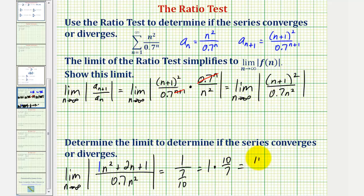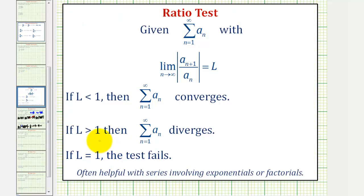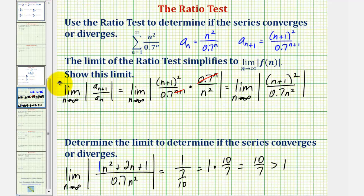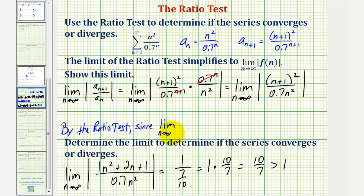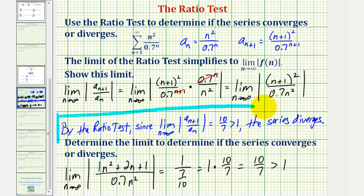So the limit is equal to ten sevenths, which is greater than one. So when applying the ratio test, if the limit is greater than one, then the series diverges. By the ratio test, since the limit as n approaches infinity of the absolute value of a sub n plus one divided by a sub n equals ten sevenths, which is greater than one, the series diverges.